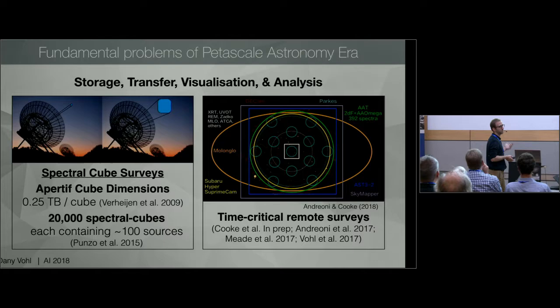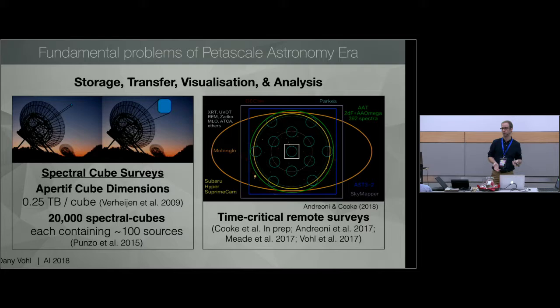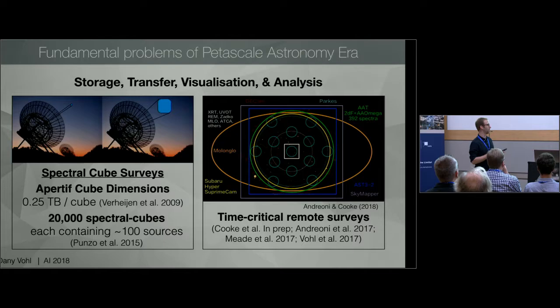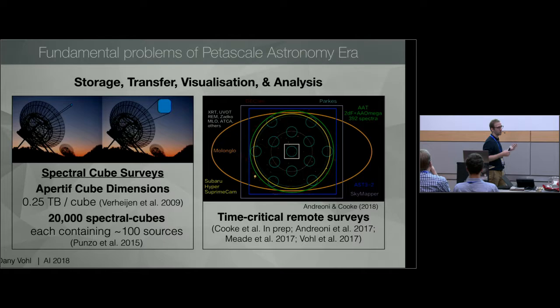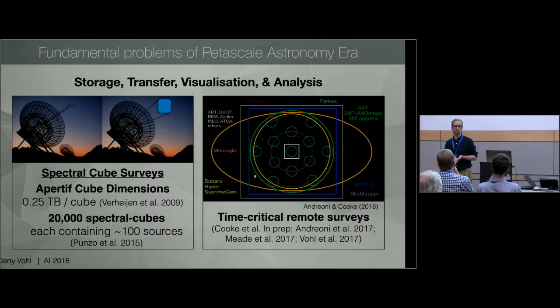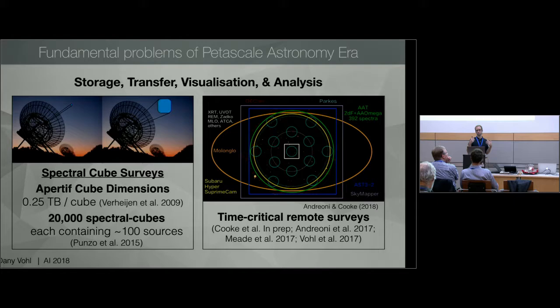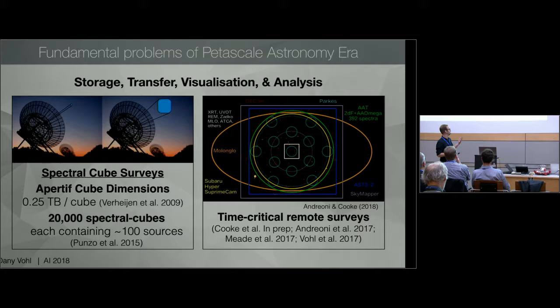Spectral cubes from Apertif will be a quarter of a terabyte per file — way too big for just a laptop. Similarly, the WALLABY survey using the ASKAP telescope in Australia will have terabyte file cubes. For Apertif, the survey is expected to collect about 20,000 spectral cubes throughout the course of the survey, with about 100 sources per cube. So obviously you need automated pipelines, but humans also need to be in the loop to make sense of all that data.